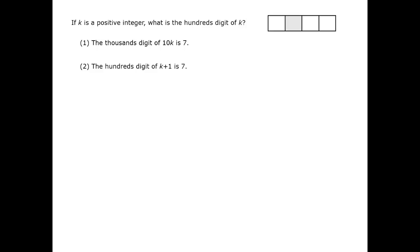Let's turn to the data statements separately first. Statement 1 describes the thousands digit of 10k. For example, if k is 725, then 10k is 7,250.